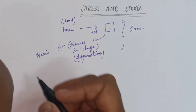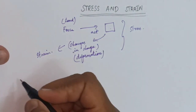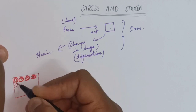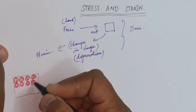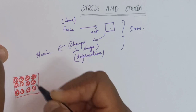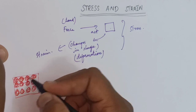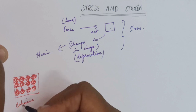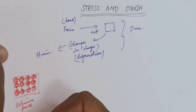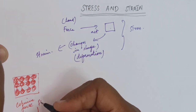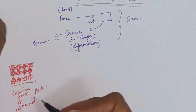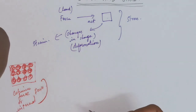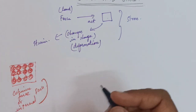All materials are made up of small molecules. Likewise, the object is made up of molecules, and these molecules are bound or connected to each other by a force that is called cohesive force or internal force. This internal force is going to be your stress.